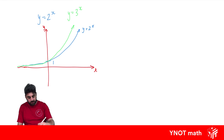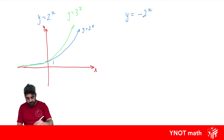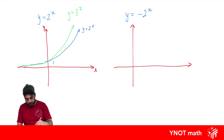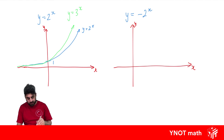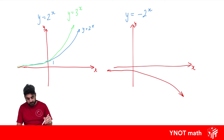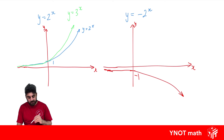Now focusing on y equals 2 to the x, let's look at some simple graph transformations. What happens if we have y equals minus 2 to the x? A minus in front of any function just flips it using the x-axis as a mirror. So this one goes through minus 1 instead of 1, and gets closer and closer to the x-axis up here without ever touching it.